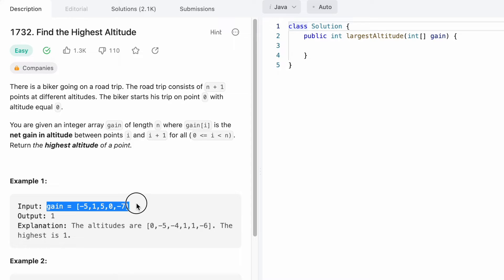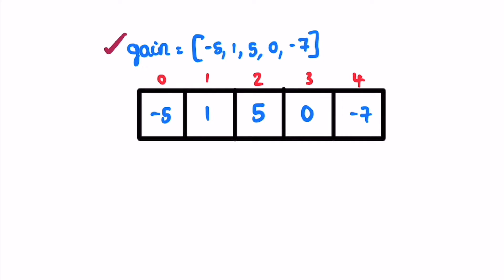Let's take a look at this example and see how this question can be solved. I've taken the same example given to us. Currently, we're at altitude zero, so I declare a variable current and initialize it to zero.